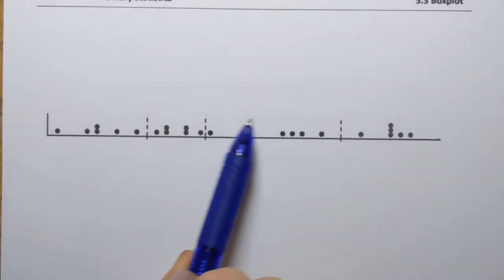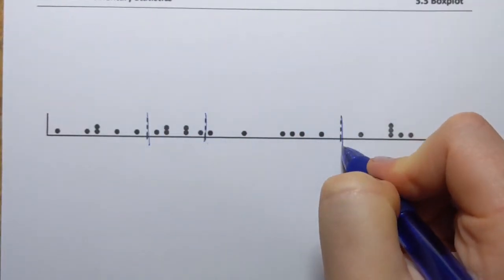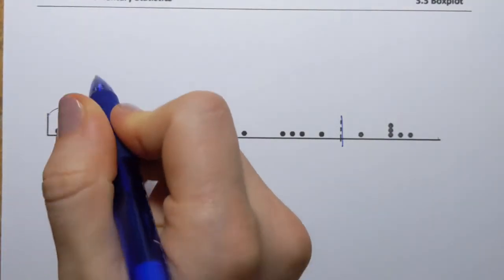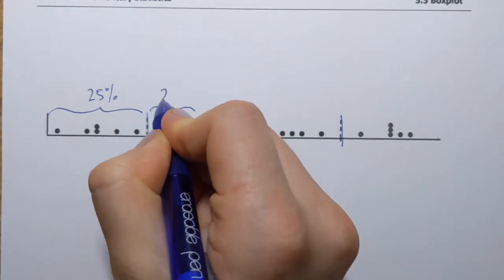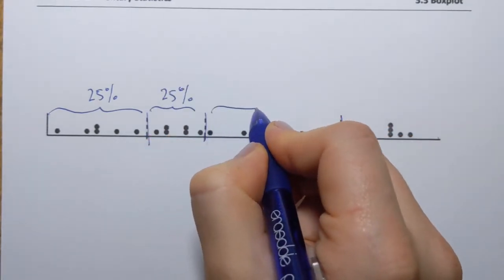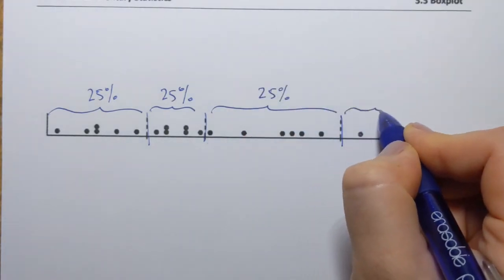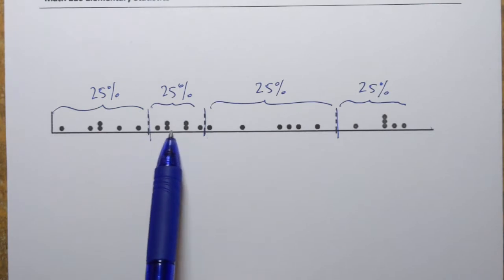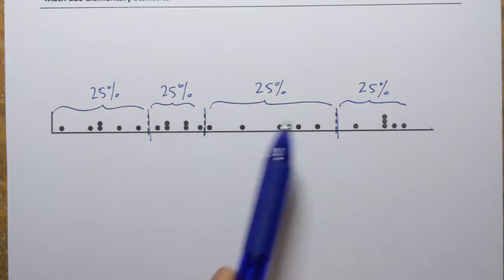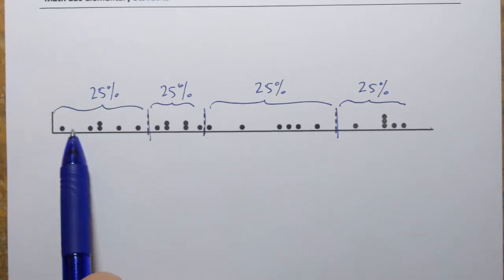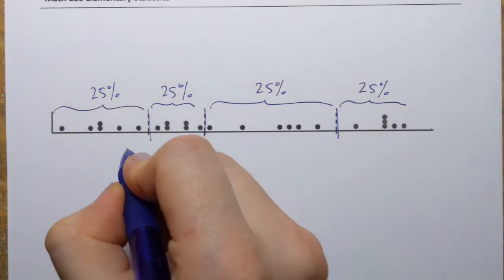So if I take this data set and split it into four parts, such that each represents 25 or about 25 percent of all observations, then these values that separate parts are going to have special names in statistics. The first one that separates the first 25 percent, so 25 percent here, 75 percent to the right, is called first quartile.